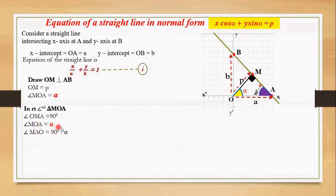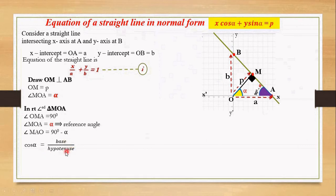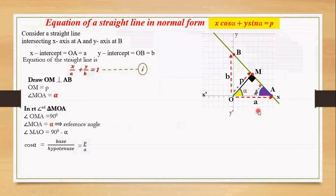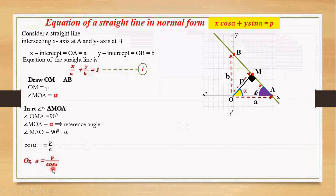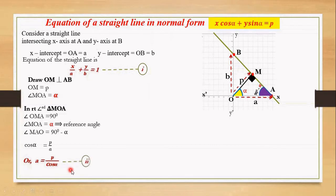Taking angle MOA equals to alpha as the reference angle, let's find cos alpha, whose ratio is base by hypotenuse. For this alpha, the base is length OM which equals to P, and the hypotenuse is OA which equals to A, opposite the 90 degree angle. So we have cos alpha equals to P by A, which gives us A equals to P by cos alpha. Let's label this equation number two.